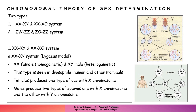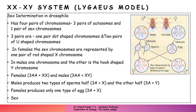In the Lygaeus model, you have XX females and XY males, where females are homogametic and males are heterogametic — the case with normal females and humans. This type is seen in Drosophila, humans, and other mammals. Here, females produce one type of ovum with X chromosome, and males produce two types of sperms — half carrying the X chromosome and half carrying the Y chromosome.